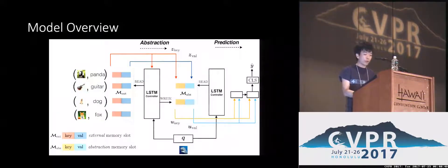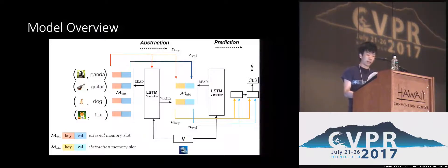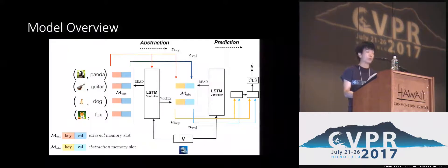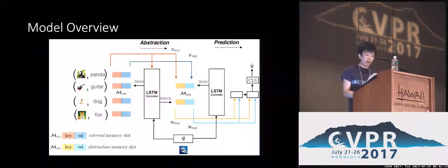We formulate the few-shot object recognition problem into a key-value memory network. We use image embedding as key and label embedding as value. We put web images into the external memory, then use the query image to retrieve information from external memory. Conditioned on the query image, the LSTM controller decides where to read from the external memory, and what to write and where to write into the external memory. Another LSTM controller takes the query and reads over the external memory to conduct classification.